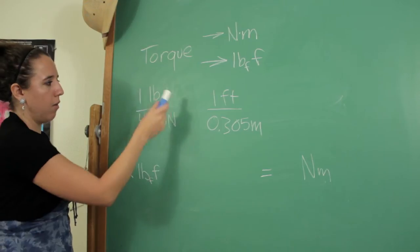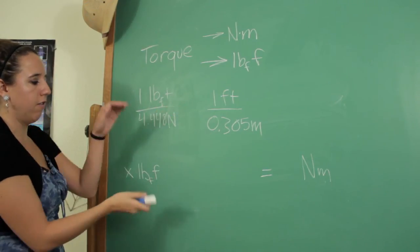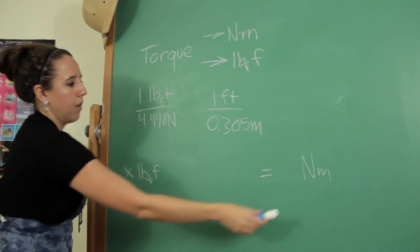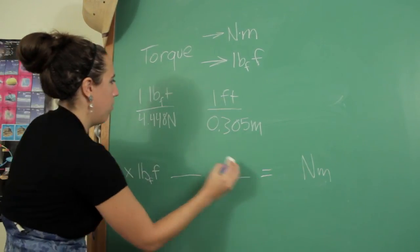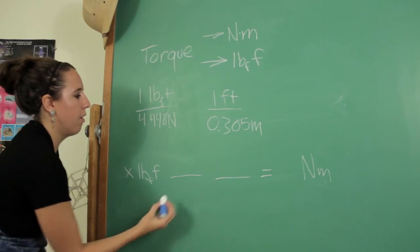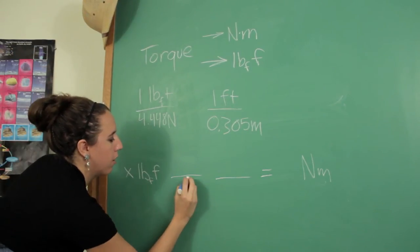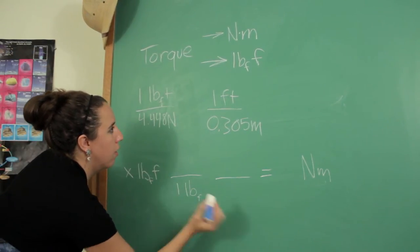So basically you want these conversion factors flipped so that this cancels out and all you have is that. So if we want newton meters on the top, we're going to want our pounds and our feet on the bottom. So we will just go there.